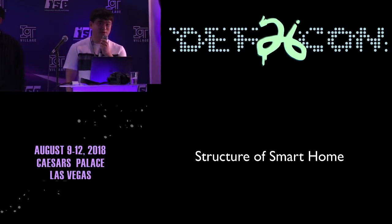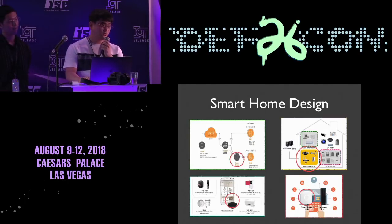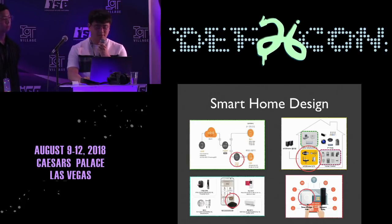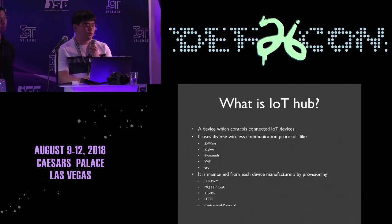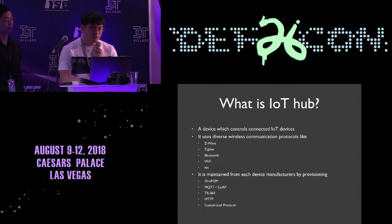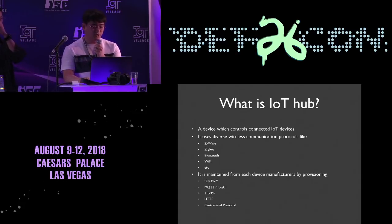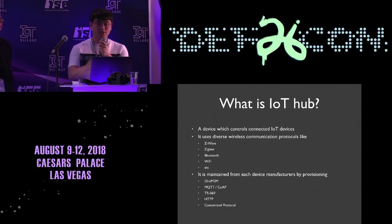Smart home services can be broken down into four layers: application, platform server, IoT hub, and IoT things. There are times when no IoT hub is needed, but it is present in most smart homes. The IoT hub manages small devices and supports wireless protocols like Z-Wave, ZigBee, Wi-Fi, and Bluetooth. To connect to a platform server, it uses diverse provisioning protocols including TR069, MQTT, CoAP, HTTP, oneM2M, and custom protocols.